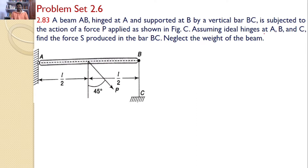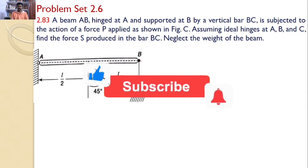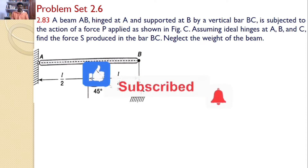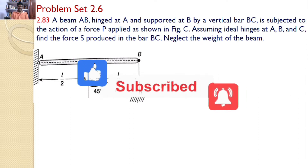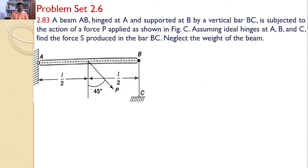Assuming ideal hinges at A, B, and C, find the force S produced in the bar BC, neglecting the weight of the beam. That means beam AB is supported with a hinged support at A and supported by a vertical bar BC at B. A force P is acting in this direction, making an angle of 45 degrees with the vertical.